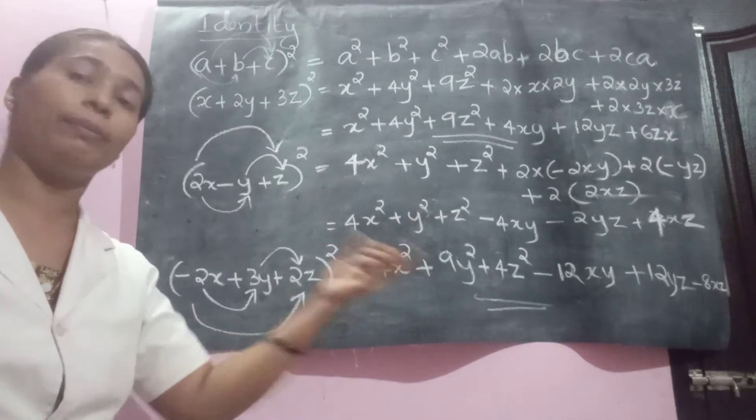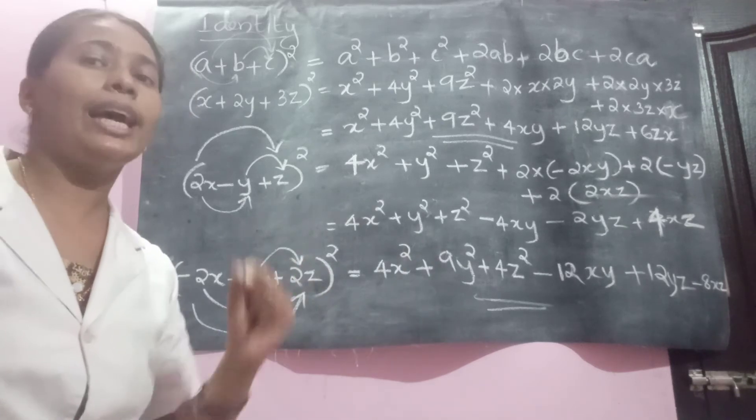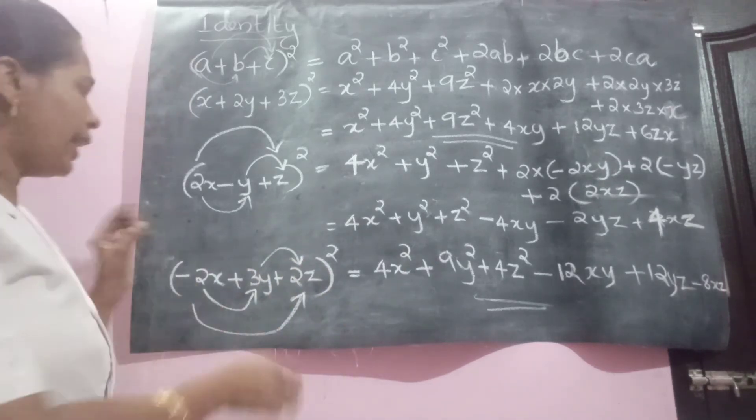Multiply, double it. Because the term is 2AB. Second term, 2BC. Last term, 2CA or AC. As you like. Let us move to the next one.